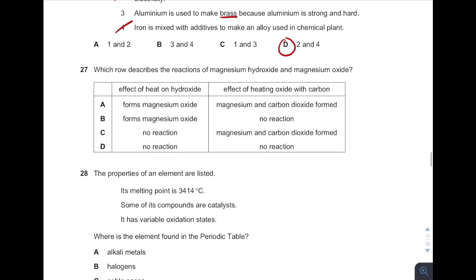Okay, which row describes the reactions of magnesium hydroxide and magnesium oxide? Effects of heat on the metal hydroxide - magnesium hydroxide can undergo thermal decomposition to produce metal oxide. Then effects of heating with carbon. Remember, carbon is placed in between aluminum and zinc. From here we know that magnesium is more reactive than carbon. So can carbon displace magnesium? No, it can't. So answer is B.